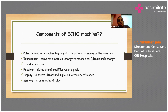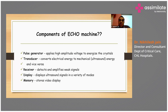What are the components of the echo machine? You've got a pulse generator, which applies high-amplitude voltage to energize the crystals. You've got a transducer, which converts electrical energy to mechanical energy and vice versa. You've got a receiver, which detects and amplifies the weak signals. Then you've got a display wherein you can see these ultrasound signals in a variety of modes. And you have a memory, which stores these displays in the form of a video.